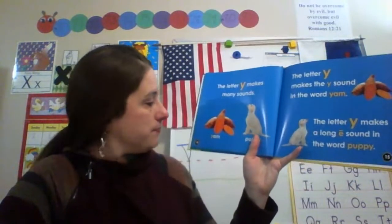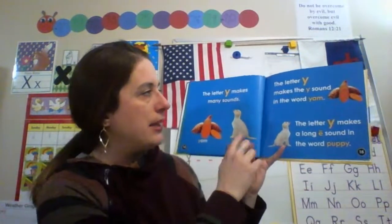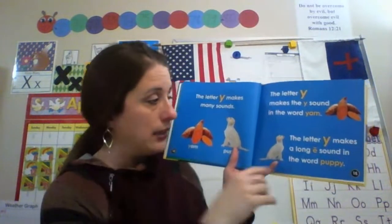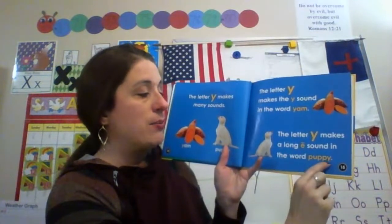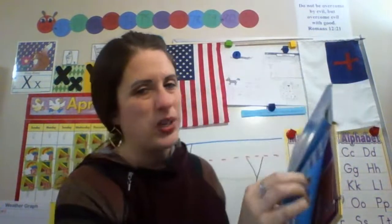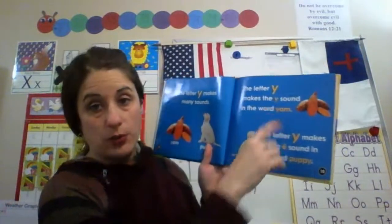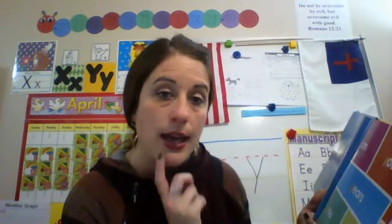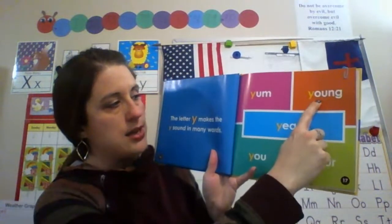The letter Y makes many sounds. Like yam and puppy — the letter Y makes the Y sound in yam: yeah, yeah, yam. The letter Y makes the long E sound in puppy. Remember, letters make different sounds, and in preschool we usually learn the first sound, then you learn more in kindergarten as you start putting letters into words to read. The letter Y makes the Y sound in many words like yum, young, years, your, and you.